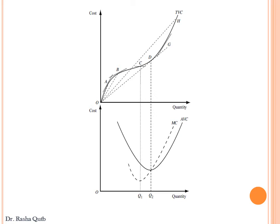The average variable cost is at its minimum at point D, and at such a point it equals marginal cost. So marginal cost and average variable cost both take a U shape. The marginal cost curve first decreases to reach its minimum at point C and then starts to increase. The average variable cost reaches its minimum after that, at point D. The marginal cost curve intersects the average variable cost curve when the average variable cost reaches its minimum.